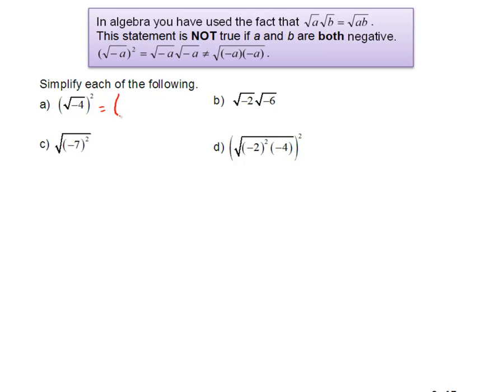this is 2j, remember the negative gives us the j, the 4 square root is 2, and now we square it. Now we don't have to worry about what rules we're applying. So this is 4j squared, j squared is minus 1, so minus 4.